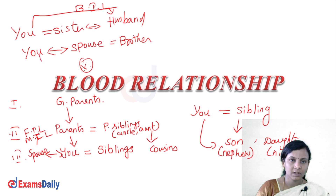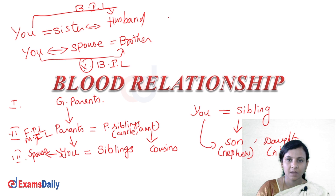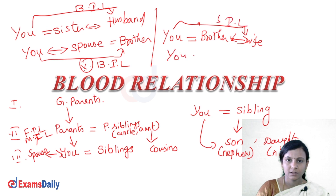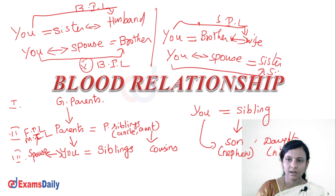Your brother's wife is your sister-in-law. Similarly, your brother's wife is sister-in-law to you. You can also relate through your spouse — your wife's or husband's sibling would be your sister-in-law or brother-in-law.